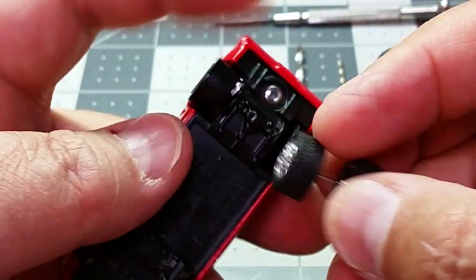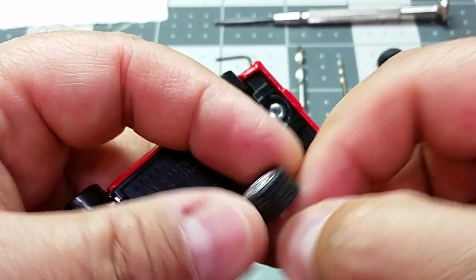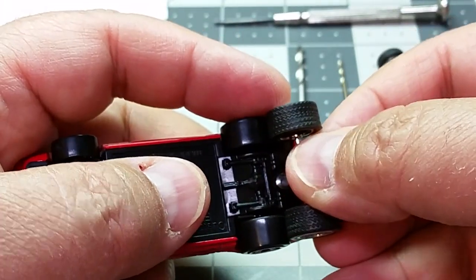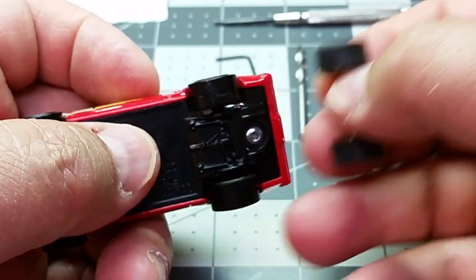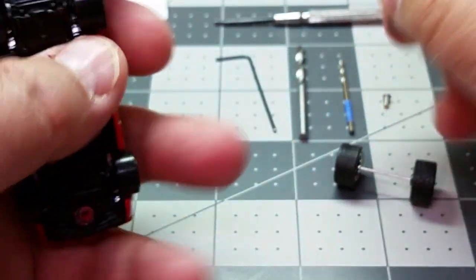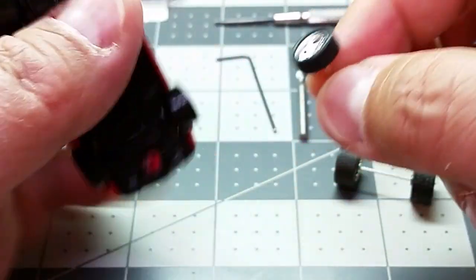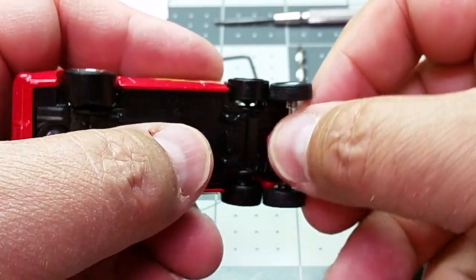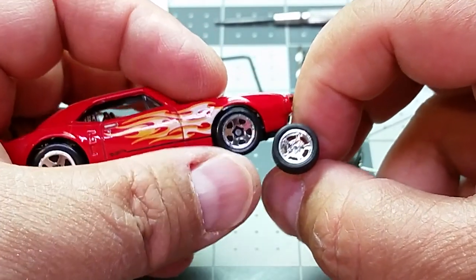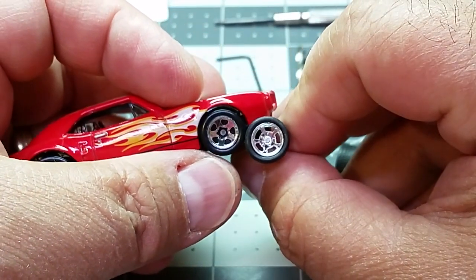I found a set that match almost perfectly and you can see how these compare to the original wheels. The front wheels, even though the spacing is the same, are a little bit narrower, but as you'll see they look just fine on the car once they're installed.